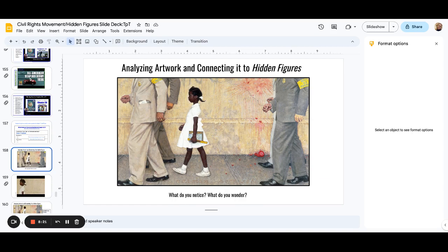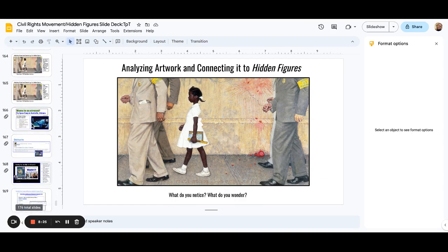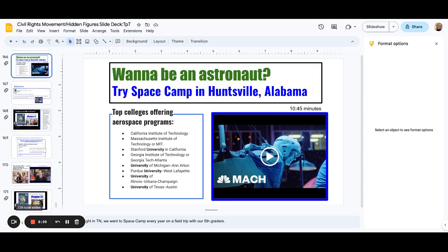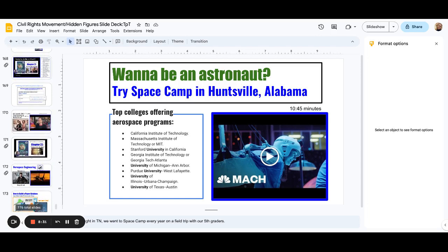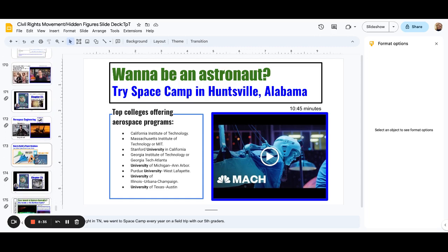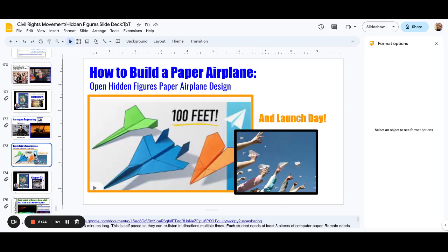Here is analyzing art. This is about a quick mini lesson on Ruby Bridges. And then some connecting to the text about space. And then it actually ends with chapter 23. This book is quick. This is a fun little lesson to do at the end. We actually do this the day after our big state test. And you get this doc that's linked below. It's included. And how to build a paper airplane.